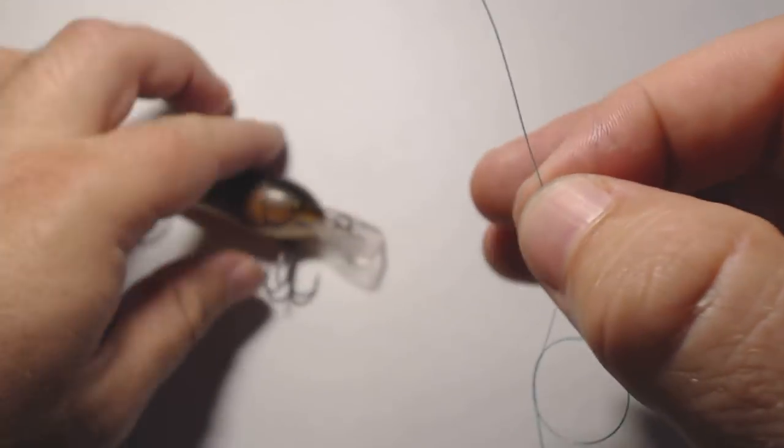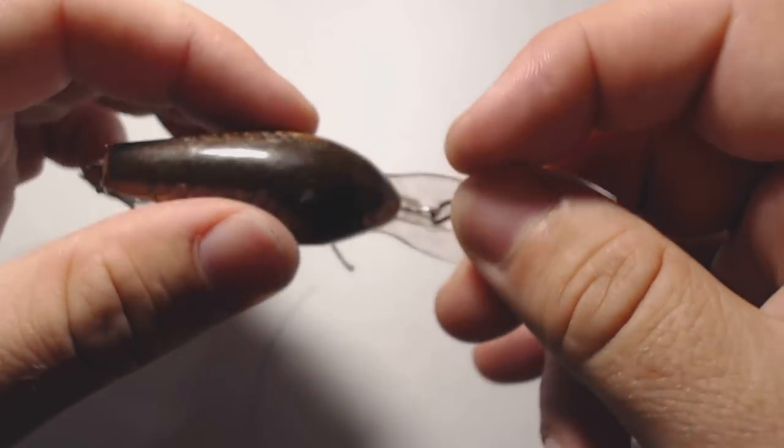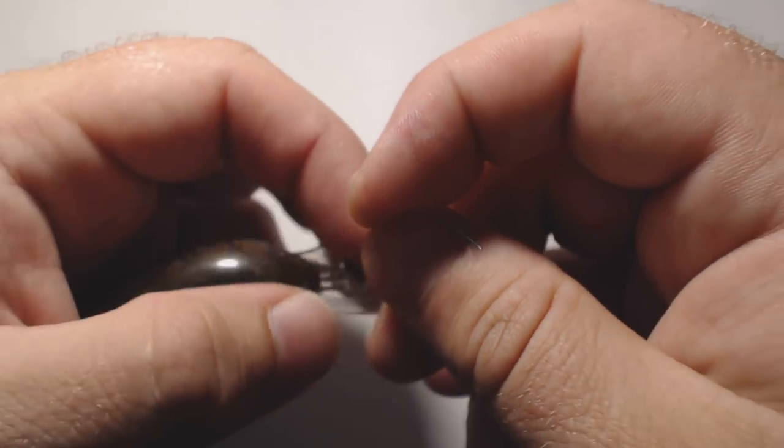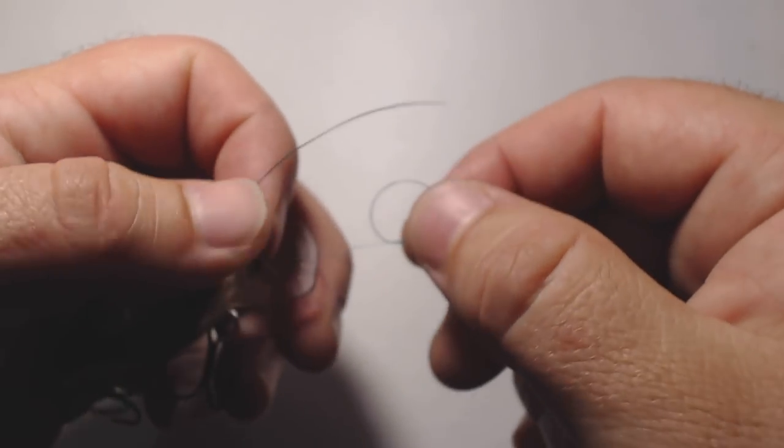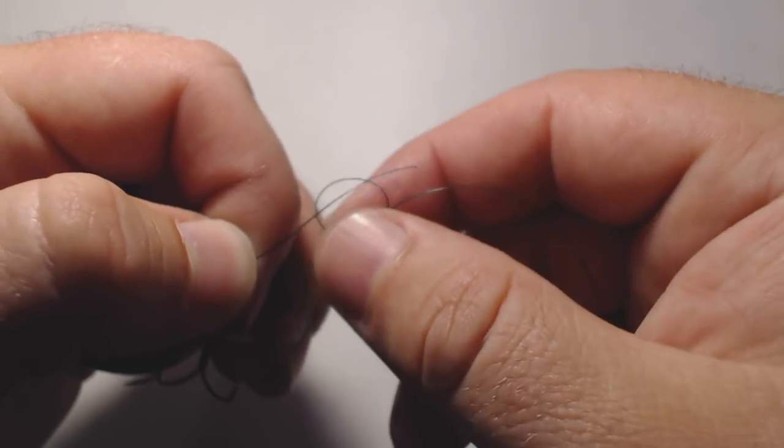Then you take your tag end and you're going to put it through your Rapala there. After that, put it through the loop you made.